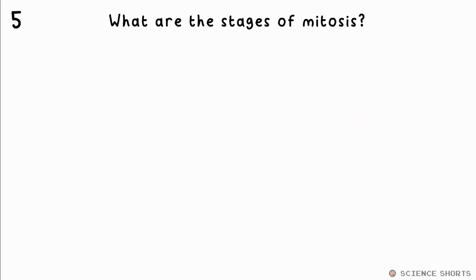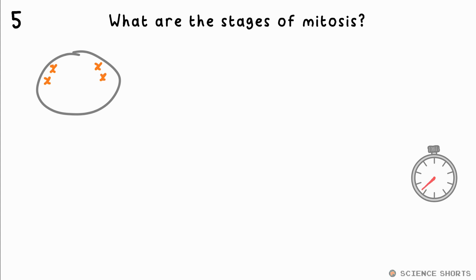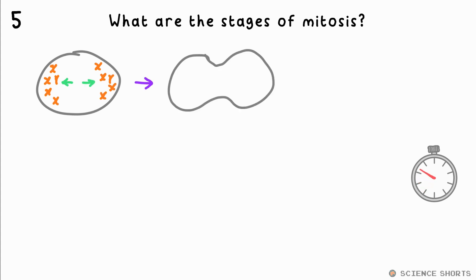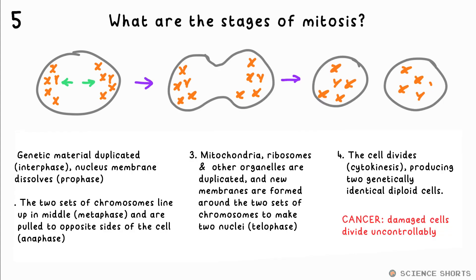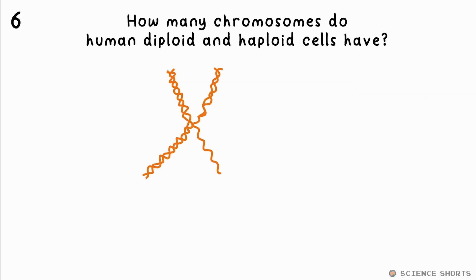What are the stages of mitosis? The nucleus dissolves and the genetic material is duplicated. The two sets of chromosomes then move to opposite sides of the cell. The organelles are also duplicated. The cell then divides, producing two genetically identical diploid cells.